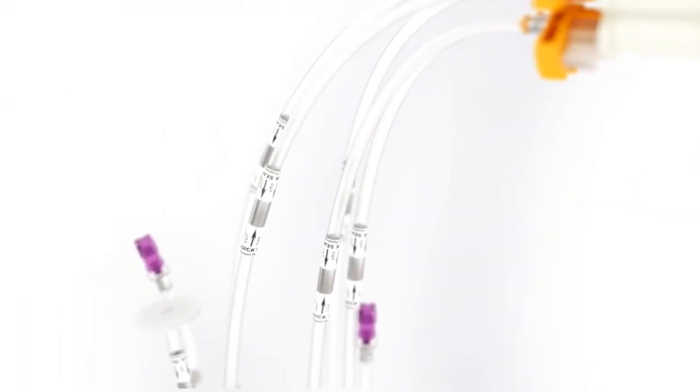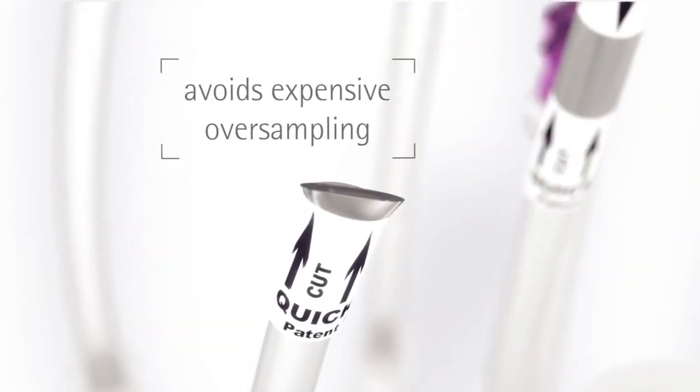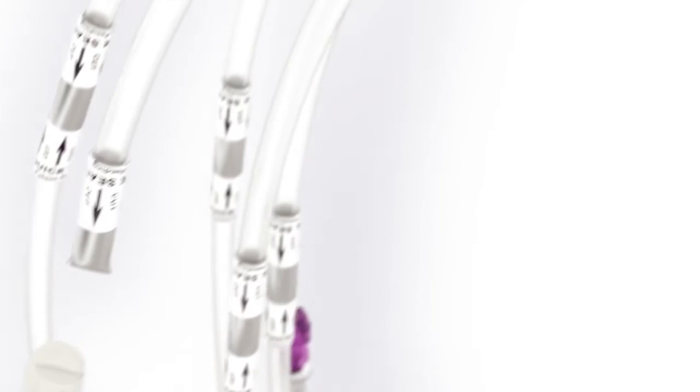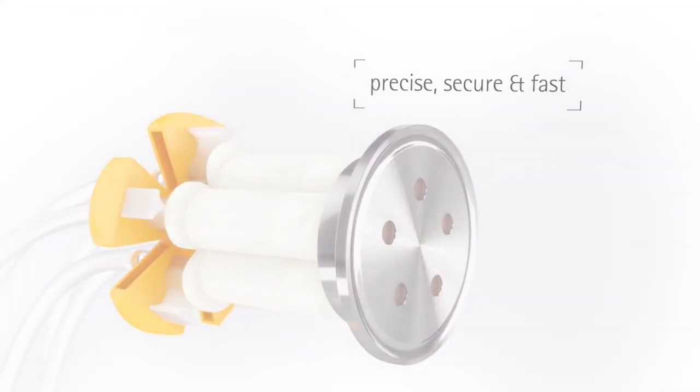Quick Seal aseptically disconnects the tubes within seconds. Take 1 avoids expensive oversampling and samples remain representative. Take 1 makes your sampling precise, secure and fast.